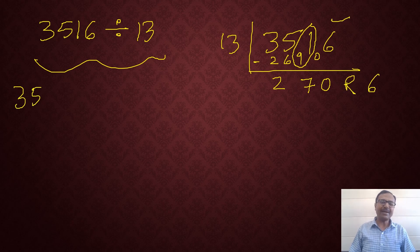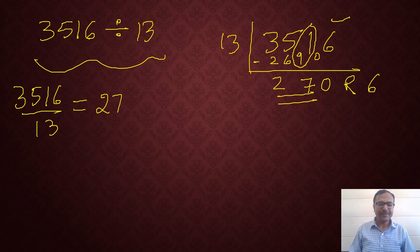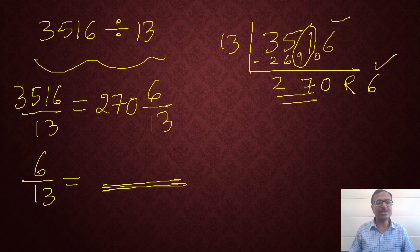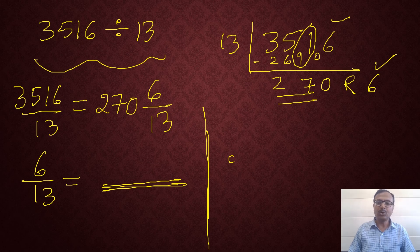So actually 3516 upon 13 is the quotient 270 and the remainder 6 upon the divisor 13. So I have converted that to a mixed number very easily. This is yet another take away from this video. You can find the mixed number representation of an improper fraction so easily using Vedic maths. So 270 6 upon 13. Now, try finding the decimal of 6 upon 13 using the method which I have told you just now. Your answer will be 270 that is the whole number part point whatever you find here.